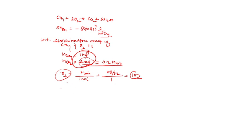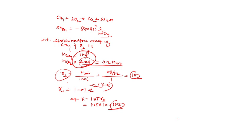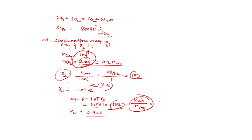Once Rs is known, we find conversion. The conversion expression is X = 1 − 0.1·e^(−2(R − Rs)). At R = 1.05 Rs = 1.05 × 10 = 10.5, substituting gives X = 0.936. So for every 1 mole of methane, 10.5 moles of air are present.